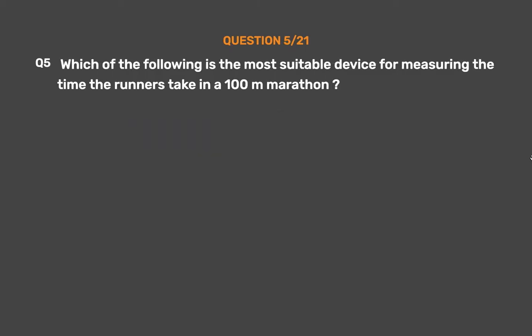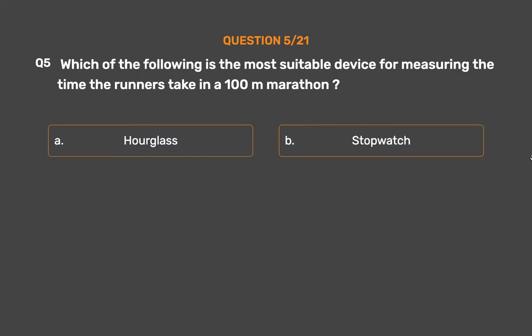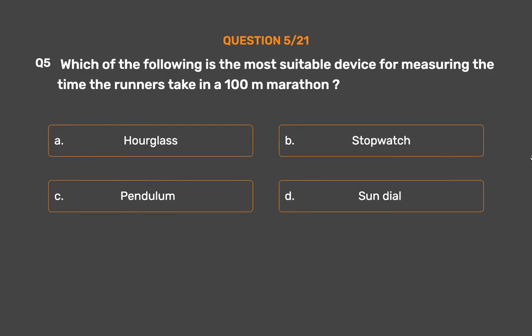Question No. 5. Which of the following is the most suitable device for measuring the time the runners take in a 100 meters marathon? Option A: Hourglass. Option B: Stopwatch. Option C: Pendulum. Option D: Sundial.